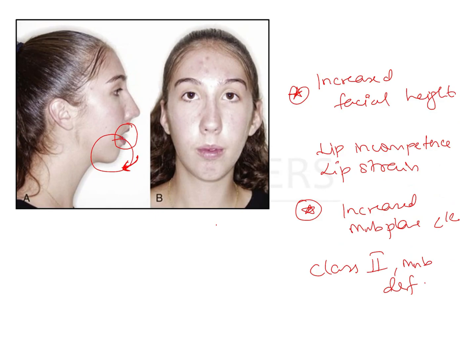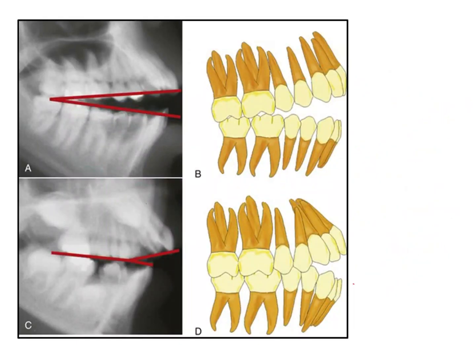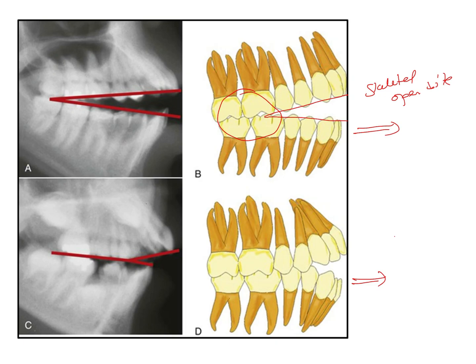In a dental open bite, the facial features will not be as prominent — there will not be increased facial height, increased mandibular plane angle, or lip incompetence. In a skeletal open bite, the open bite is more V-shaped and diffuse — only the posteriors are in occlusion, and up until the premolars there might be some interdigitation or they might be open. This is what you see in a skeletal open bite because of increased vertical growth.